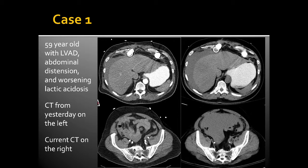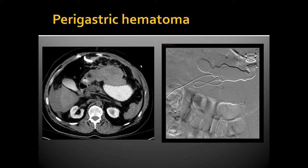The first case is a 59-year-old with a left ventricular assist device, abdominal distension, and worsening lactic acidosis. The images on the left are from a CT the previous day; the images on the right are from the current CT. The radiologist notices increased peri-hepatic and pelvic hematoma. Scrolling through the images, he identifies a new perigastric hematoma measuring greater attenuation compared to the rest of the blood product, likely representing a sentinel clot. The patient undergoes interventional radiology with successful embolization of a bleeding gastroepiploic artery.